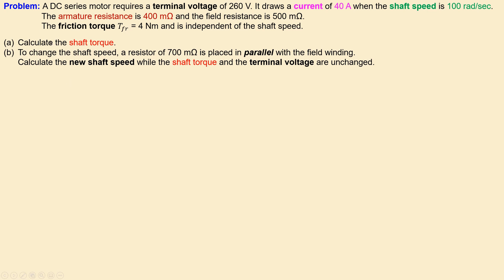We have two questions. Question A: calculate the shaft torque. Question B: a resistor of 700 milliohms is placed in parallel with the field winding, which results in a different shaft speed. Calculate the new shaft speed while the shaft torque and terminal voltage remain unchanged.